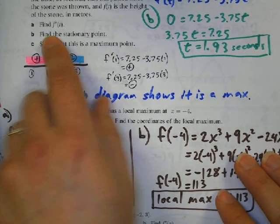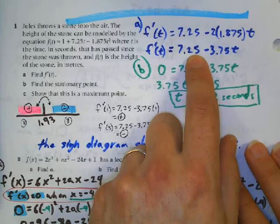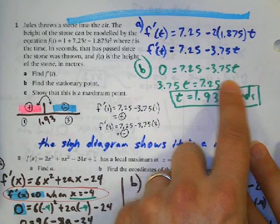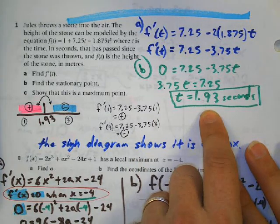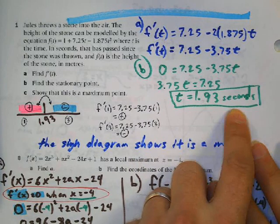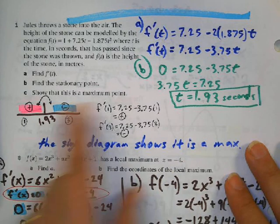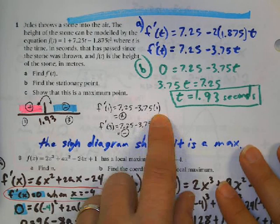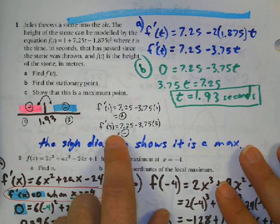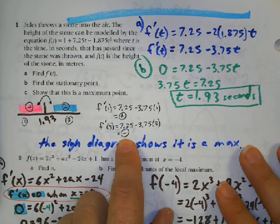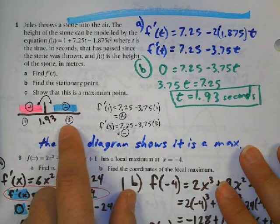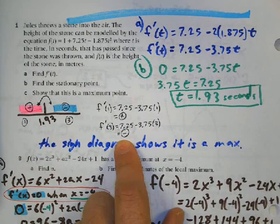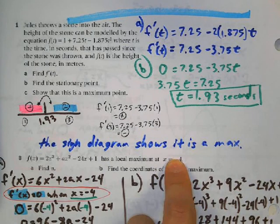Question 1: find the derivative — here's the derivative function. Question B: find the stationary point by making the derivative equal to zero; the stationary point occurs when t equals 1.93. To show it's a maximum, pick a point below 1.93, like 1, plug into the derivative and get a positive value. Pick a point above 1.93, like 3, plug into the derivative and get a negative value. The sign diagram shows it's a maximum.